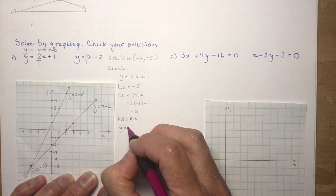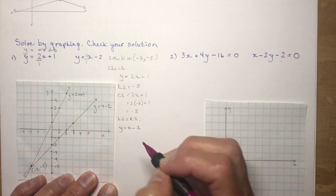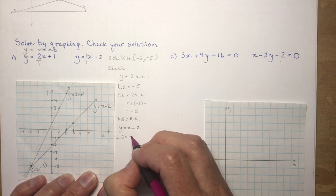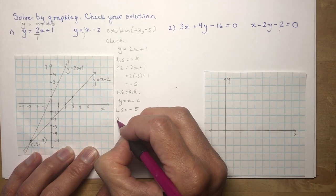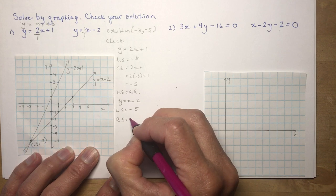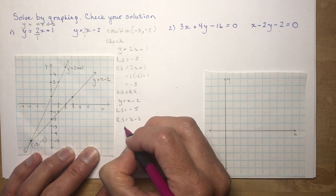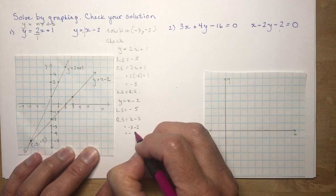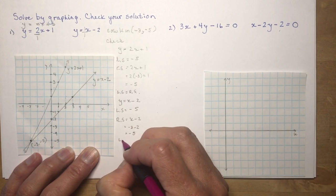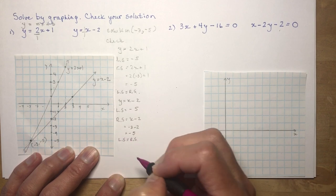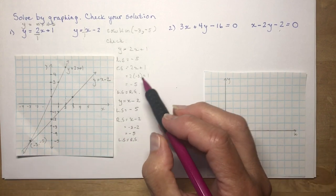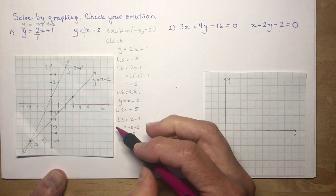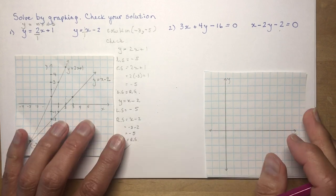That's not good enough — I have to do the same for the second equation. So y = x − 2. Left side: y = −5. Right side: (−3) − 2 = −5. Left side equals right side. So if you get the same answer for both equations, left side equals right side, then you know you're right. You can always check your answer.